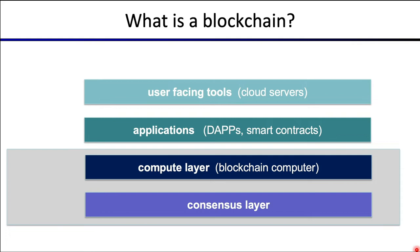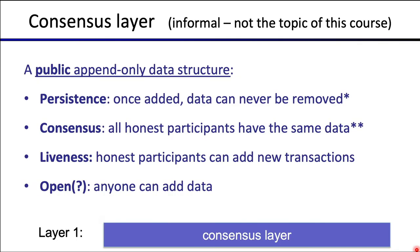We're going to talk about each one of these four layers in turn. Let's start with the consensus layer. Consensus is not the topic of this course, so I'm going to go through this very fast and basically assume that a consensus mechanism exists. What does consensus actually buy us? At a core level, consensus is about building a new capability — what's called an append-only data structure.